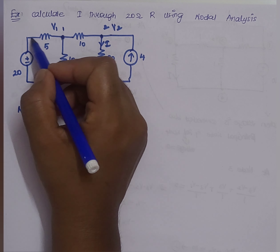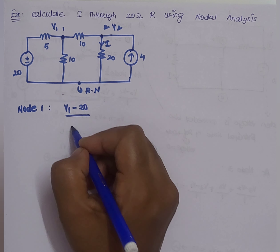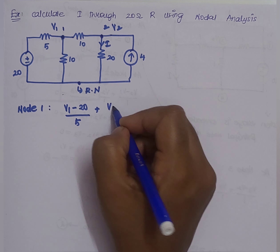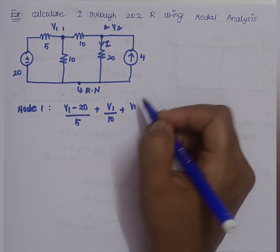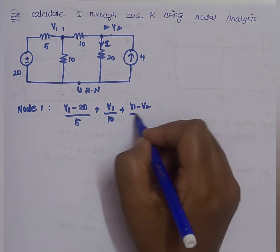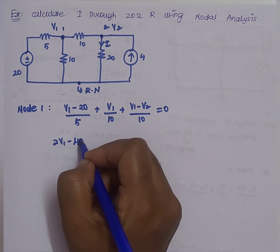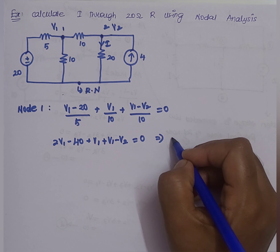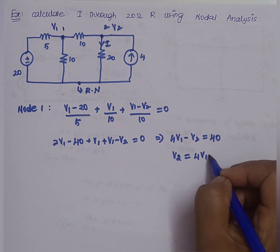We assign V1 at node 1 and V2 at node 2. For node 1, the KCL equation is: (V1 − 20)/5 + V1/10 + (V1 − V2)/10 = 0. After taking LCM and simplifying: 2V1 − 40 + V1 + V1 − V2 = 0, giving 4V1 − V2 = 40, so V2 = 4V1 − 40. This is our first equation.